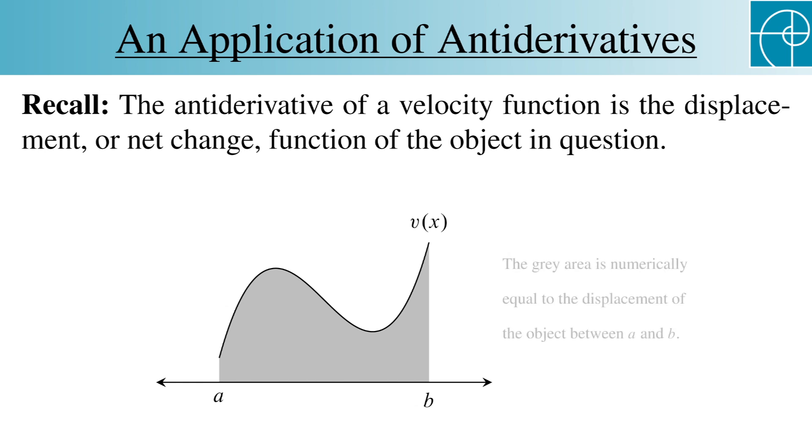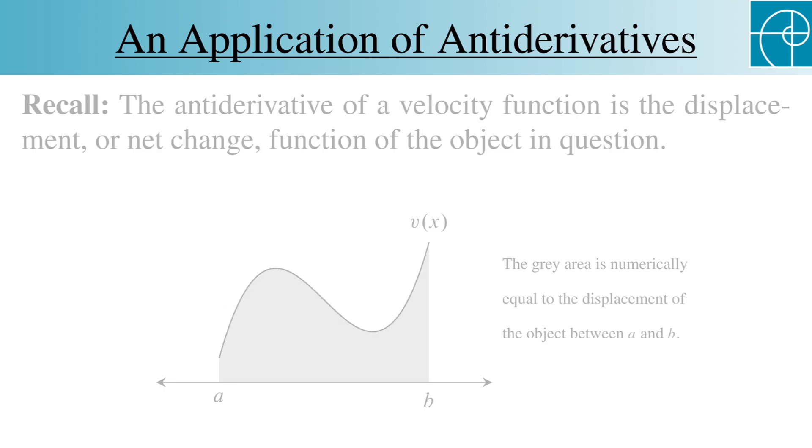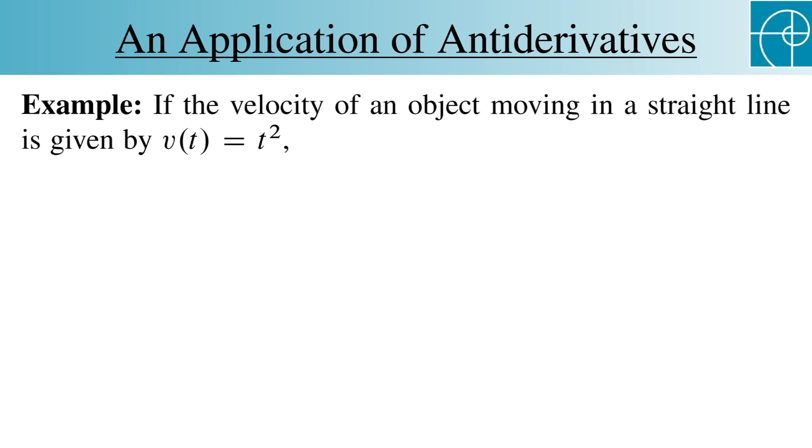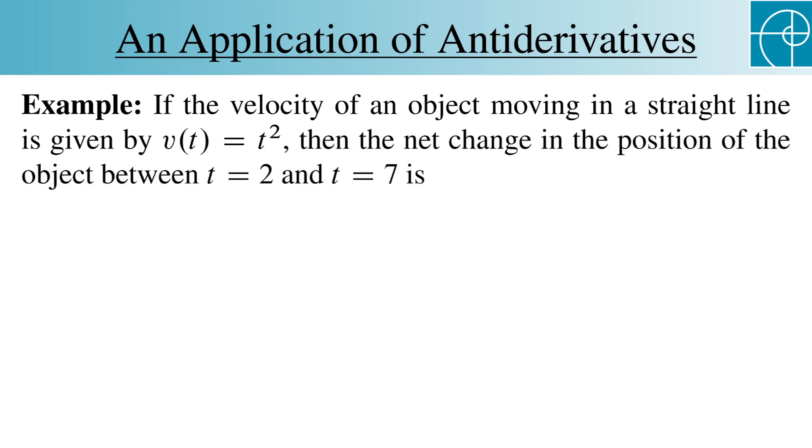For example, if the velocity at time t of an object moving in a straight line is V of t equals t squared, then the net change in the position of the object between t equals 2 and t equals 7 is the integral from 2 to 7 of t squared dt, which is t cubed over 3 evaluated between 2 and 7.